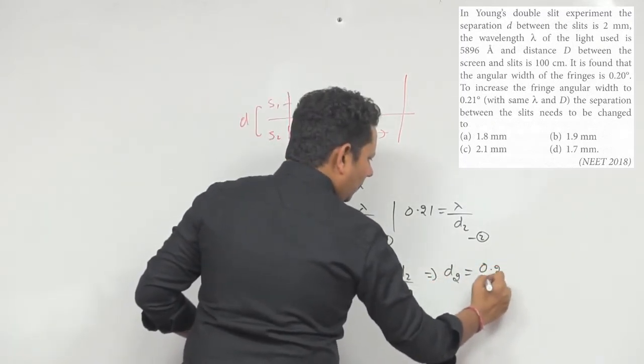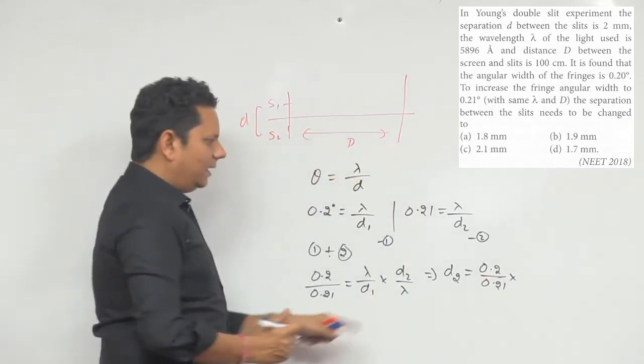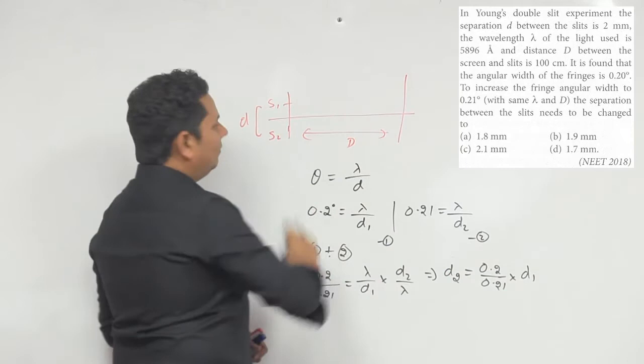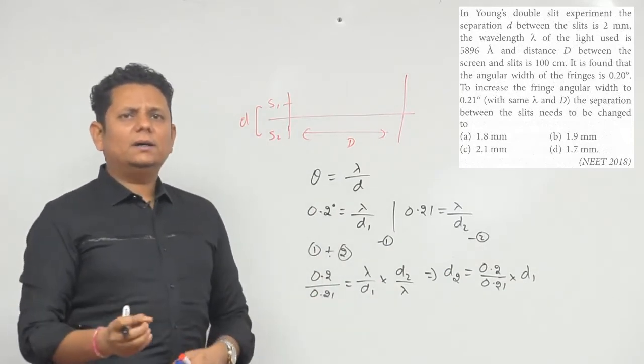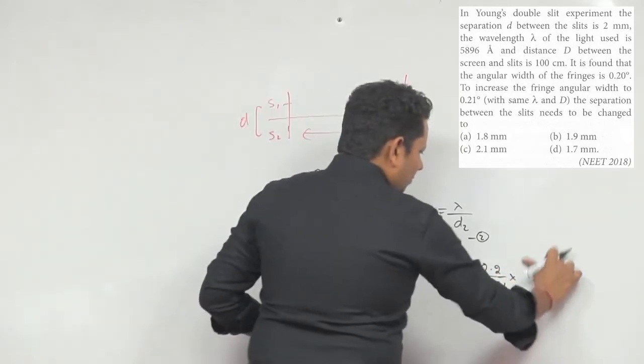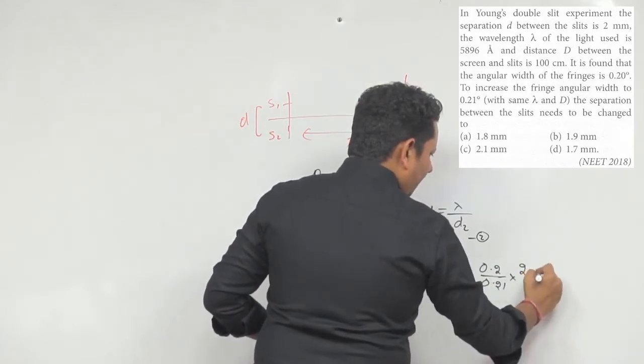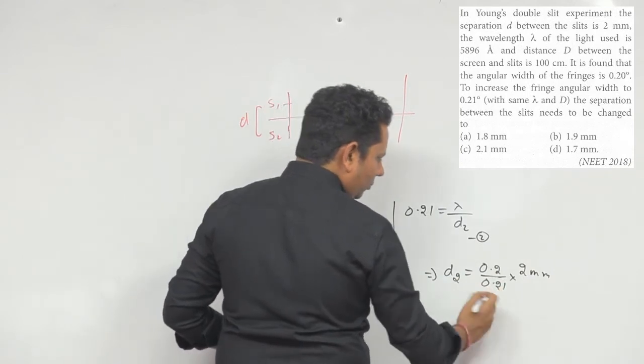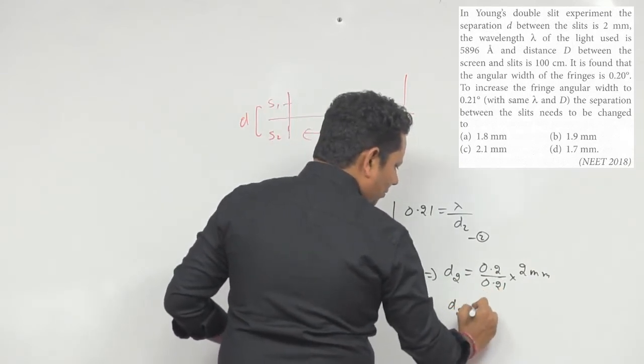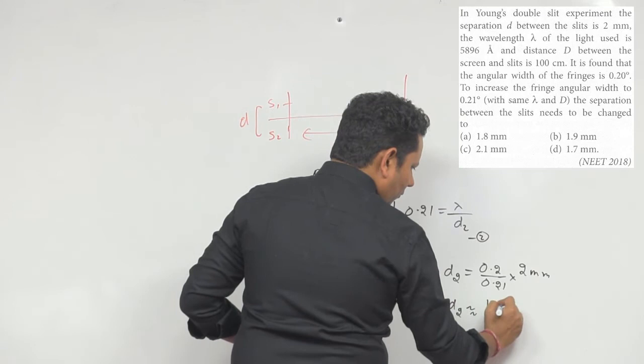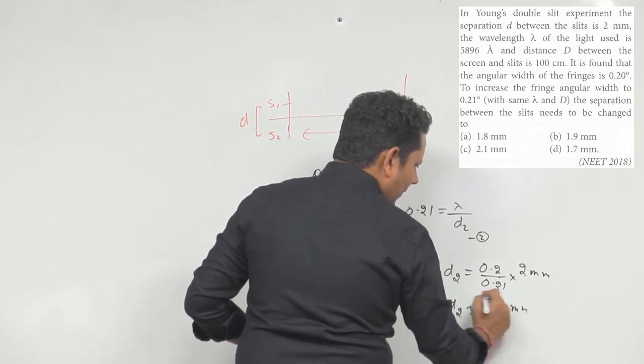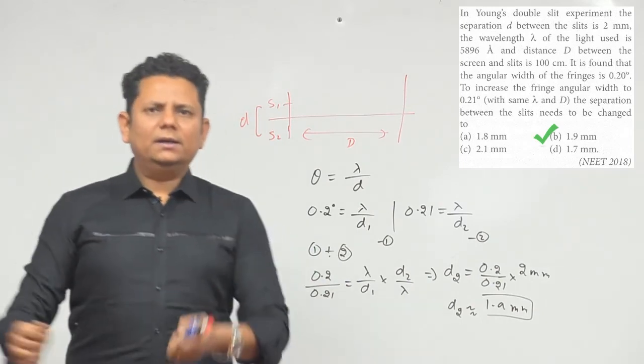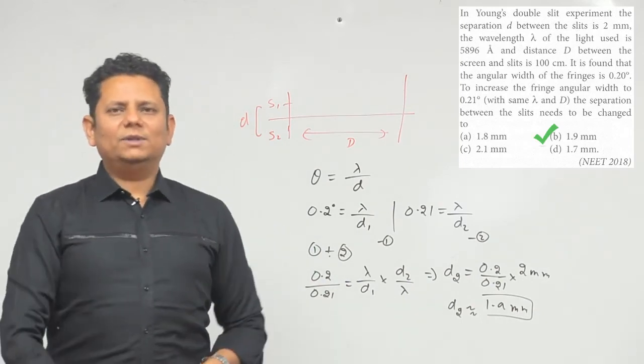So the ratio will be 0.2 divided by 0.21 multiplied by d1. Therefore d2 equals lambda divided by d1, which gives us the answer.